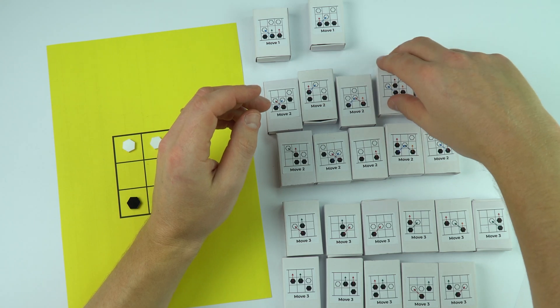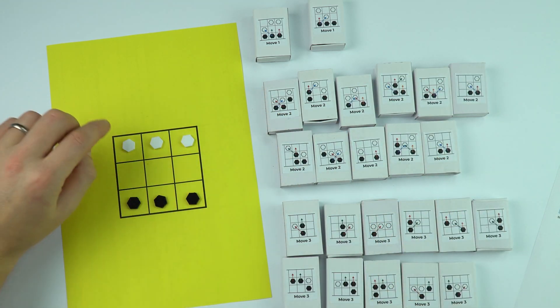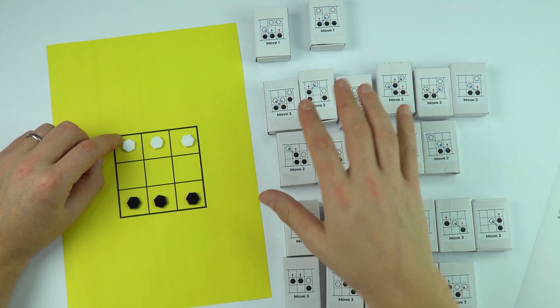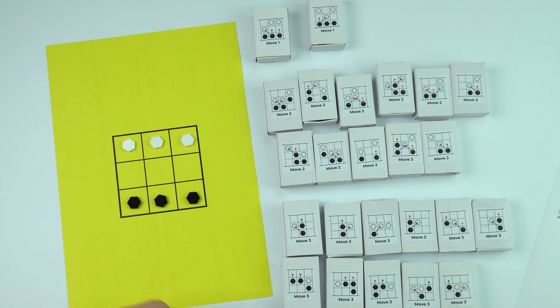Effectively, what we're going to do is look at the way that we can program something so that it never loses. You're going to be the white player and you're playing against this computer which is making the moves in black.